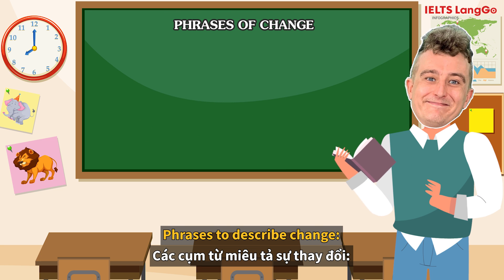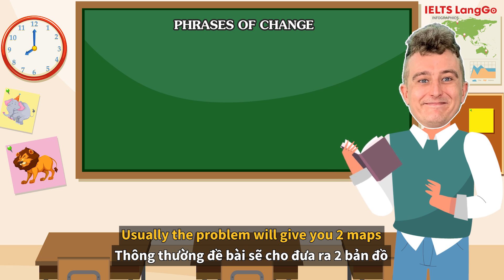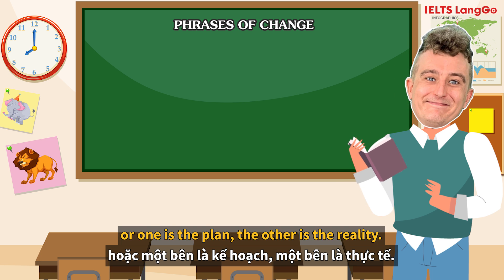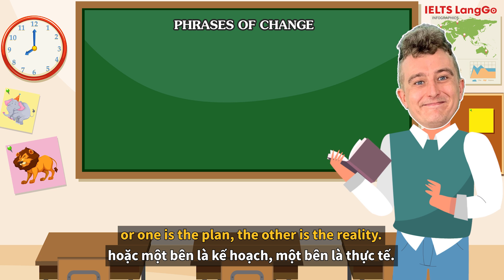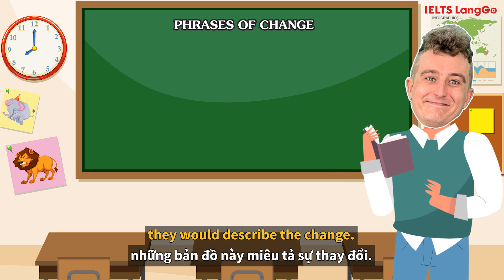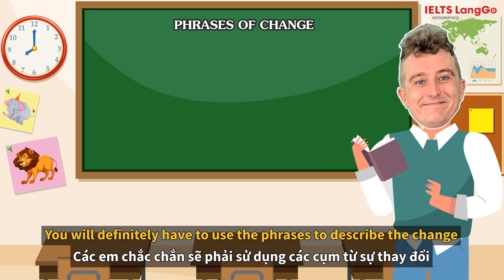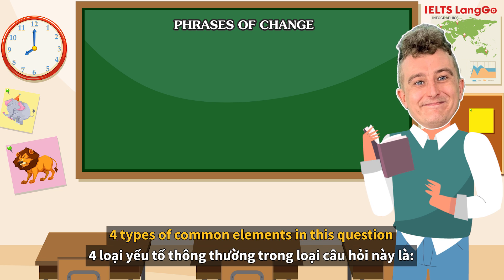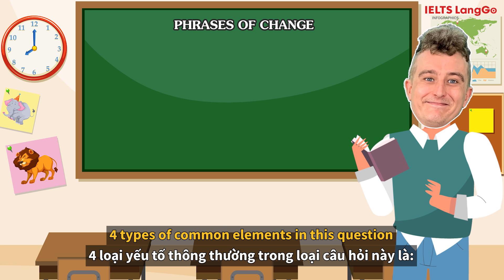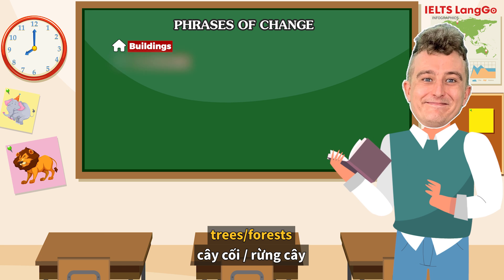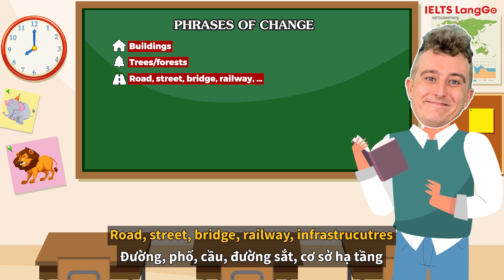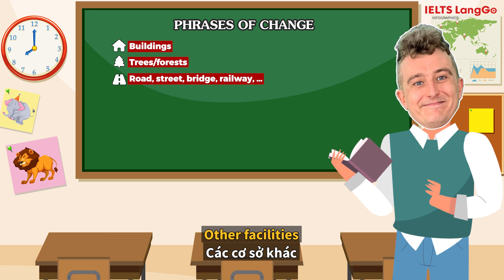Phrases to describe change. Usually, the problem will give you two maps which depict a change over time in an area, or one could be a plan and the other the reality. You'll definitely have to use phrases to describe change, to look at differences or transformation. Four types of common elements in this question are: buildings, trees or forests, roads, streets, bridges and railways, infrastructure, or other facilities.